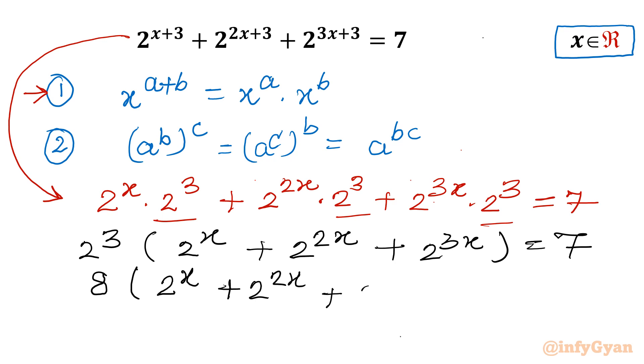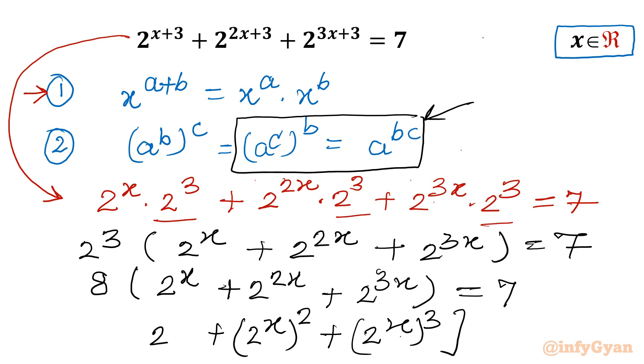In bracket it is 2^x + 2^(2x) + 2^(3x) = 7. Now using the exponent property, the second term I will write (2^x)^2 and third term of this bracket I will write (2^x)^3, and first term is 2^x, and 8 is multiplier. Right hand side is 7.